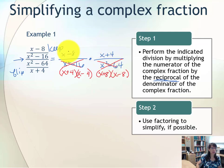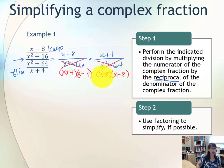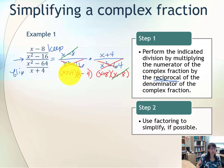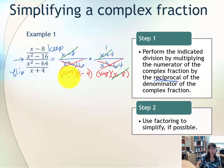Now we look in the numerator at the quantity (x − 8) and check for identical factors in the denominator. x + 4 is not a match, x − 4 is not a match, x + 8 is not a match, but x − 8 — there we go. So we have two identical factors to reduce. Looking at the numerator (x + 4), we can also see there's another identical quantity in the denominator. Remember, when crossing these out, they are not disappearing — they are reducing to 1.